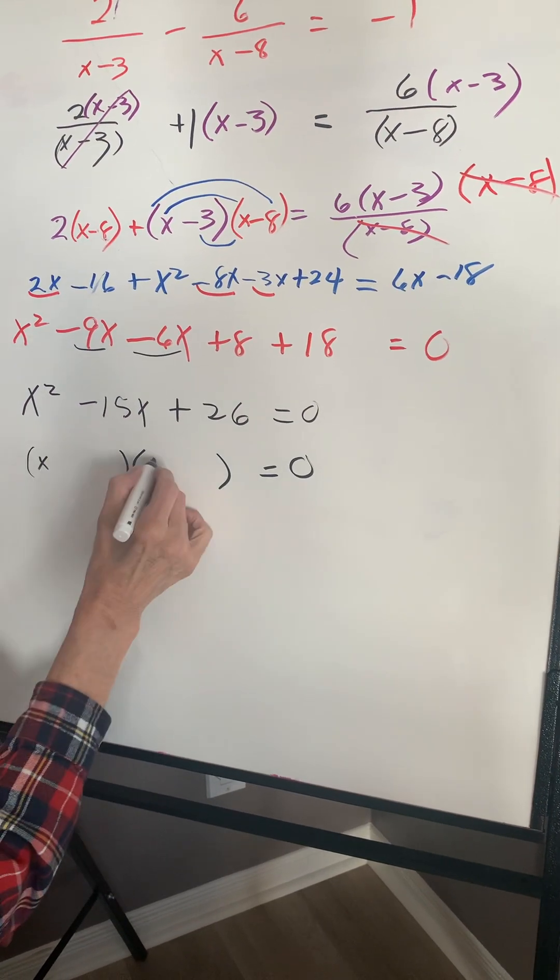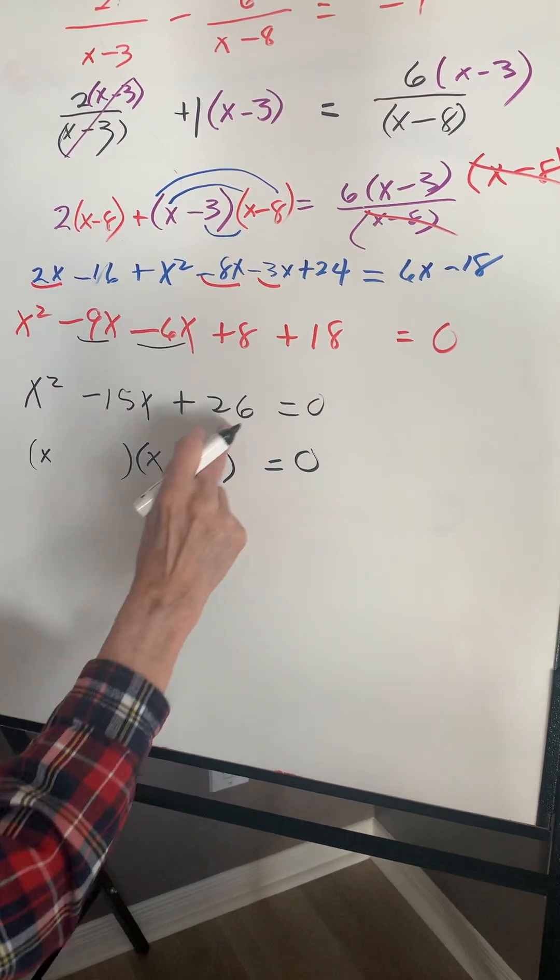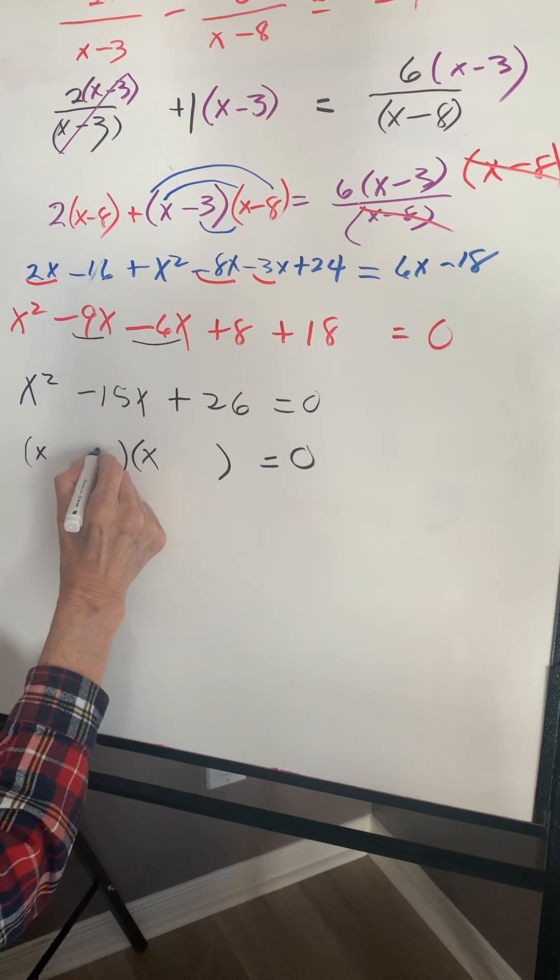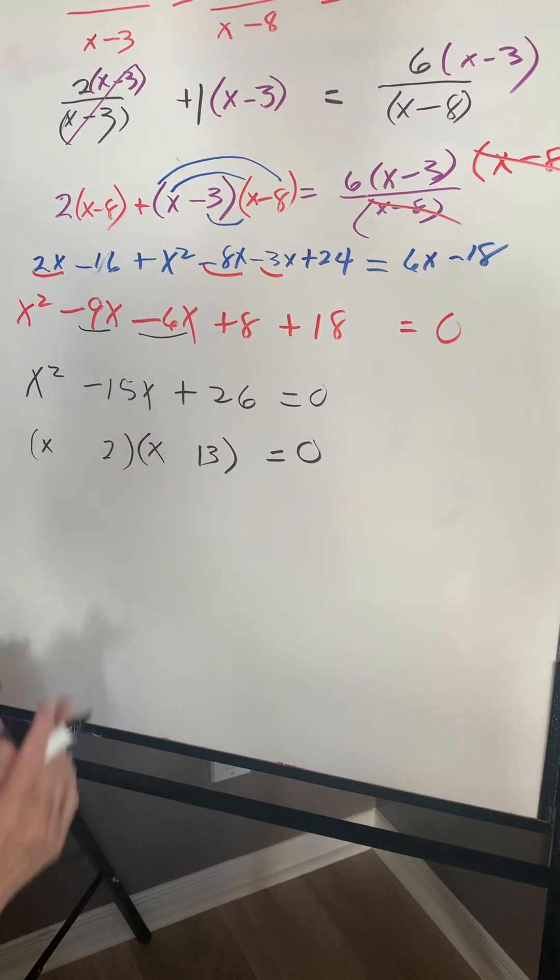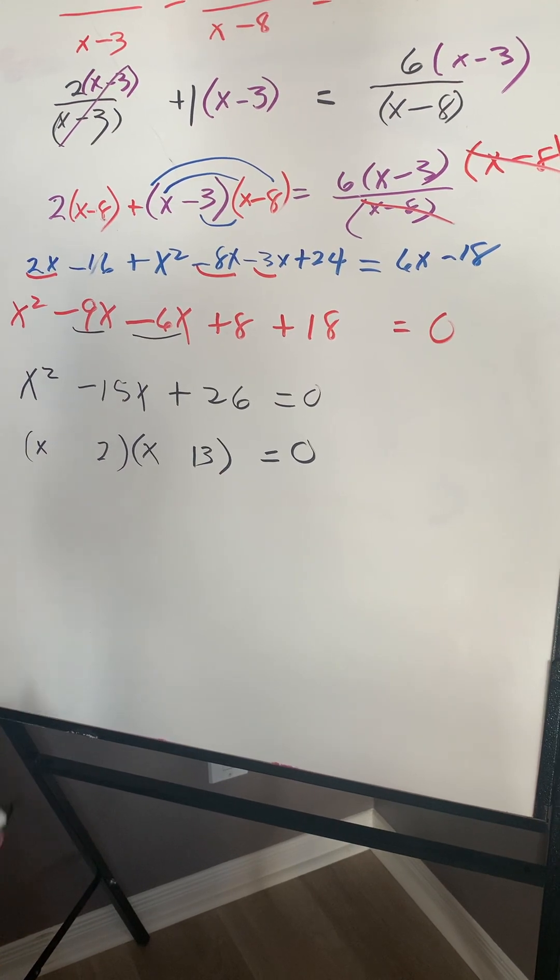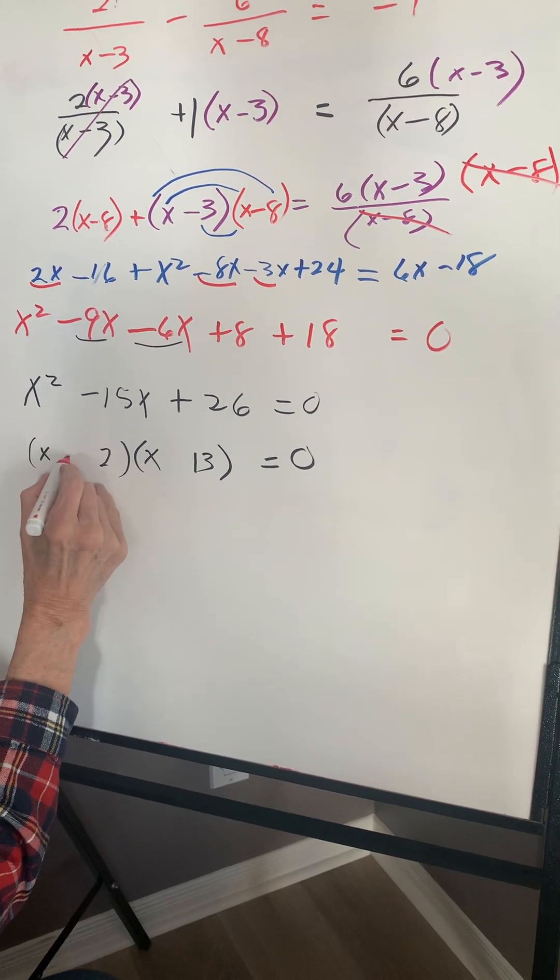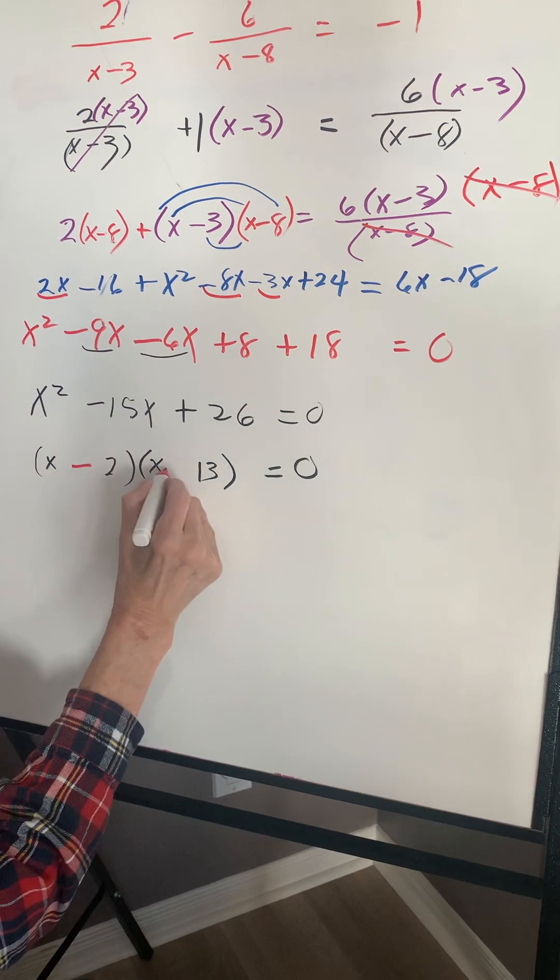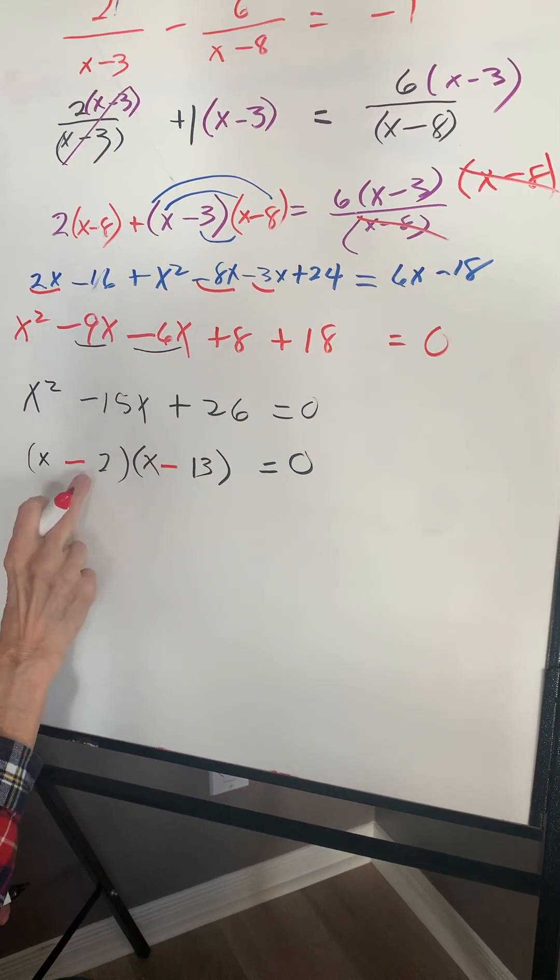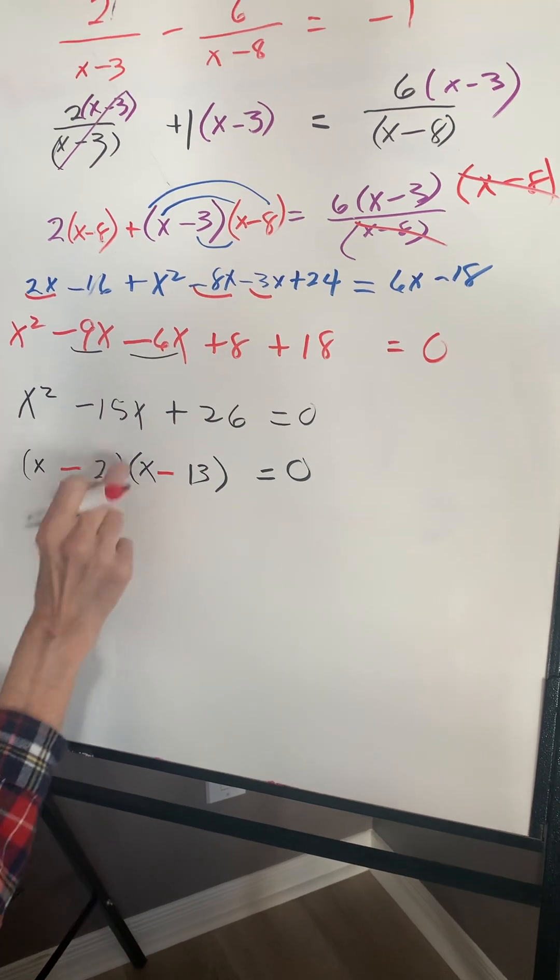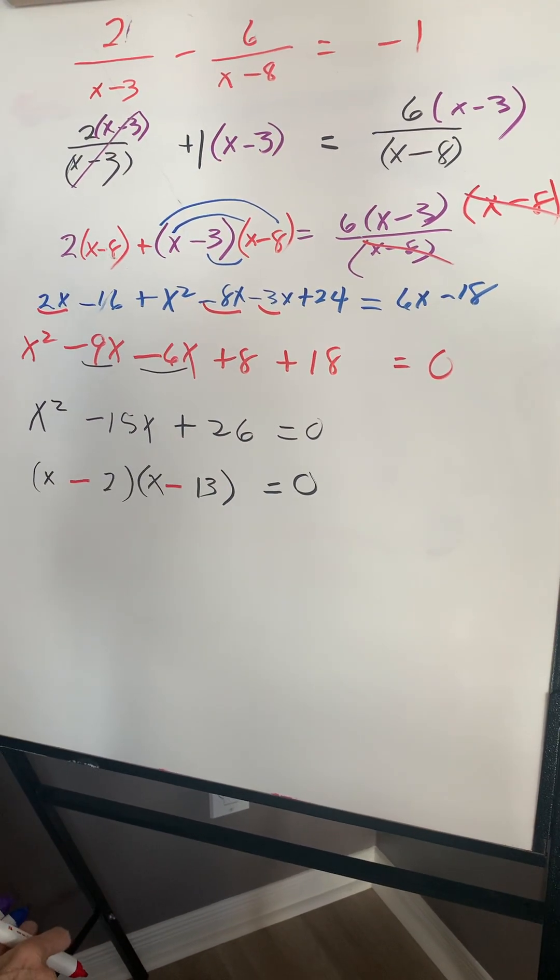x times x is x squared. Now if I break up 26, it becomes 2 times 13. I haven't put the signs in yet. Because this is negative, so this has to be a negative 2 and a negative 13 will give me negative 15. And if I multiply it, the two negatives become a positive.